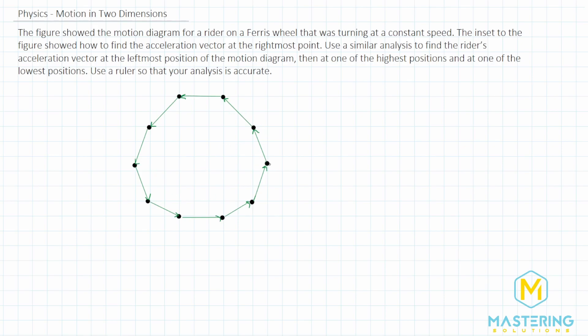And in the book, they gave us an example of how to get the acceleration vector from right here at the rightmost point. They want us to use the same thing to figure out ones from right here on the left side, and then the top and the bottom.